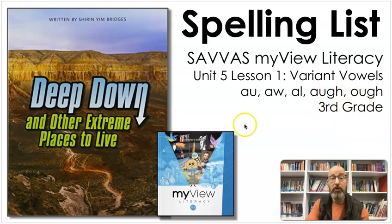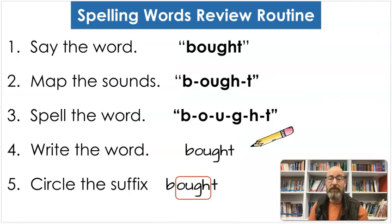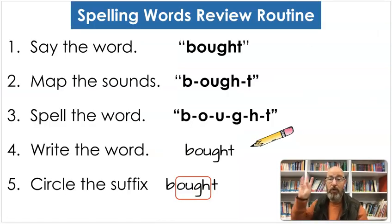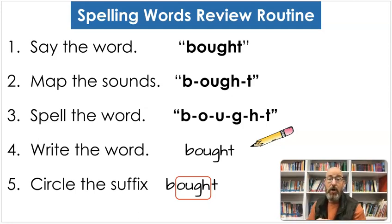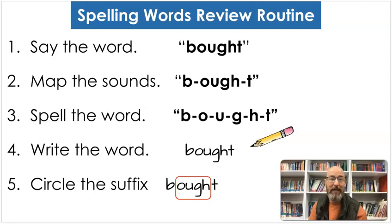If you're in third grade, your story this week is "Deep Down and Other Extreme Places to Live" — you're in the right place. Now, we're going to go through our same process we typically do: we're going to say the word, tap the sounds, spell it and smash it when we spell it, write it, and then circle — not the suffix, that's a typo — but we're going to circle the "aw" sound, the variant vowels.